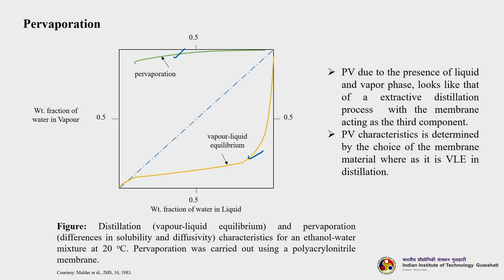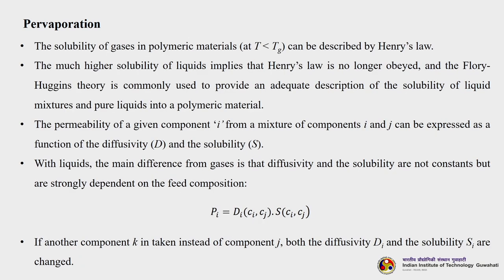A classic example is distillation versus pervaporation for an ethanol-water mixture at 20 degrees centigrade, where pervaporation was carried out using a polyacrylonitrile membrane. The solubility of gases in polymeric material can be described by Henry's law when T is less than Tg (the glass transition temperature). The much higher solubility of liquids implies that Henry's law is no longer obeyed, and the Flory-Huggins theory is commonly used to provide an adequate description of the solubility of liquid mixtures and pure liquids in a polymeric material.